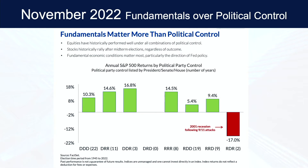The first green bar on the left is 10.3 percent — while Democrats had full control across those 22 different years, the average rate of return was 10.3 percent. When Republicans and Democrats were split — a Democrat in the presidency, Republicans in the Senate and House — it was up 14.6 percent. Then the third bar: Democrat, Democrat, and Republican — it was up 16.8 percent.